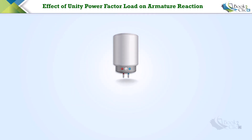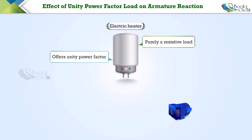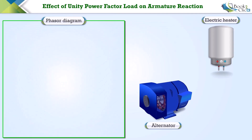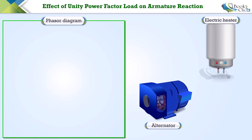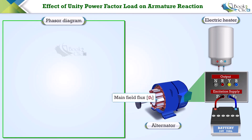Consider an electric heater — it is a purely resistive load which will offer a unity power factor to the alternator. Let's draw the phasor diagram of a two-pole alternator by connecting this pure resistive load. First, let us excite the field windings of the alternator with a 12-volt or 24-volt battery supply, which creates the main field flux phi_f in the alternator.